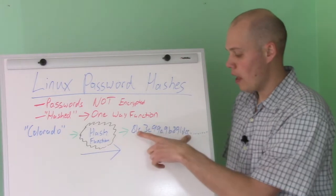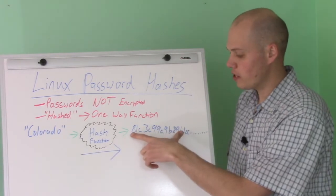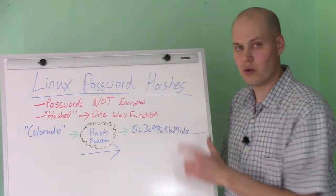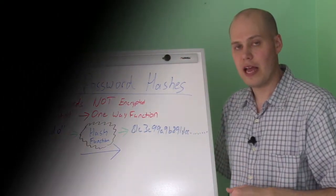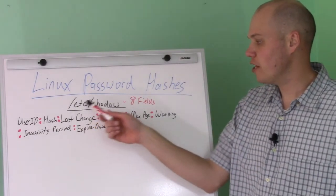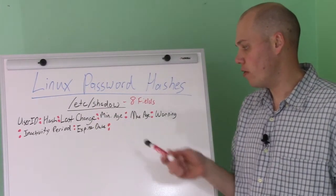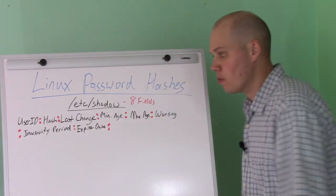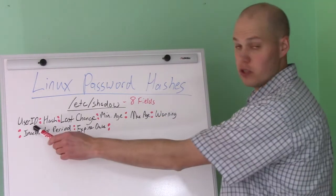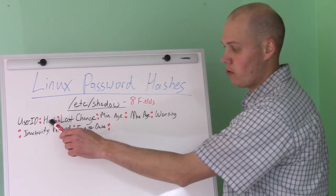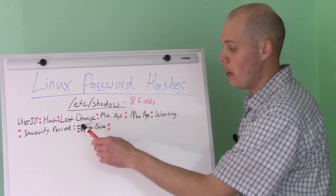Next, we'll talk about how this hexadecimal number, the hash, is stored in the /etc/shadow file. Within our /etc/shadow file, there are eight fields that are used. The first one is the user ID of the user. The second one is the hash, which we'll go into in a lot more detail.